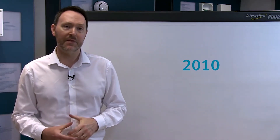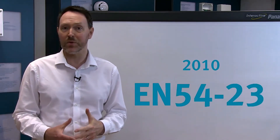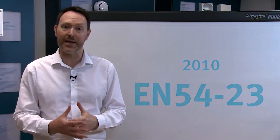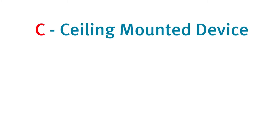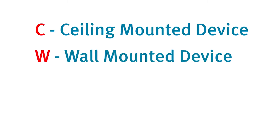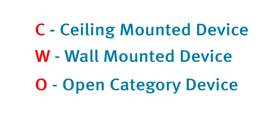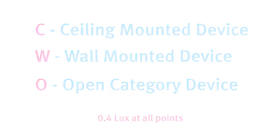Prior to 2010 there was no industry standard to determine the light output that a VAD should emit. Therefore EN54 part 23 was introduced to standardize the light output requirement. There are now three categories that a VAD can be rated under: C for ceiling mounted device, W for wall mounted device, and O for open category device. The specified output for a VAD is now required to be 0.4 lux at all points within the specified coverage volume, and all manufacturers are now required to label their VADs in a specific way.